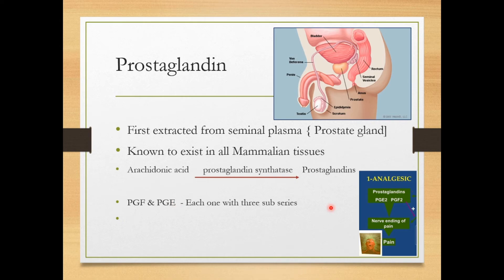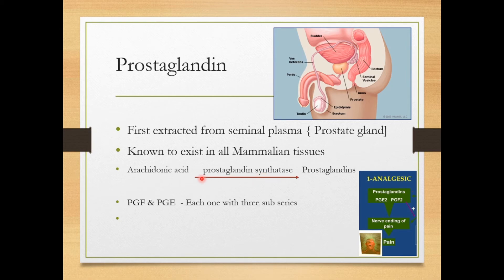Prostaglandins have important clinical applications. When an injury occurs, prostaglandins are released, stimulating the nerve endings and causing pain. Acetylsalicylic acid, or aspirin, is a potent inhibitor of the enzyme prostaglandin synthetase, which inhibits the synthesis of prostaglandin from arachidonic acid. If prostaglandins cannot be synthesized, there will be no pain — so aspirin and paracetamol work by inhibiting prostaglandin synthesis.